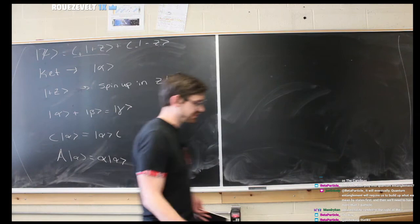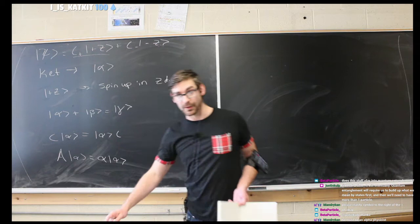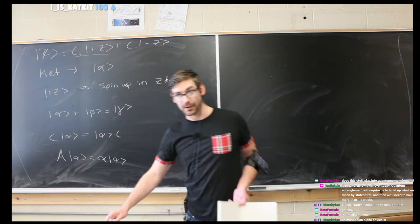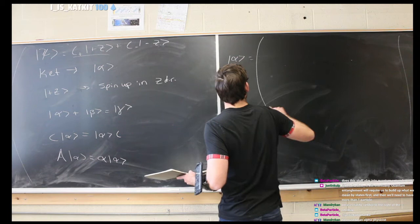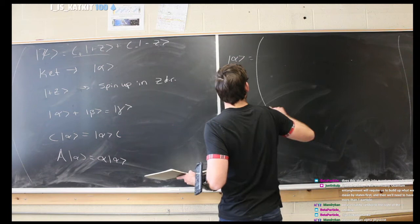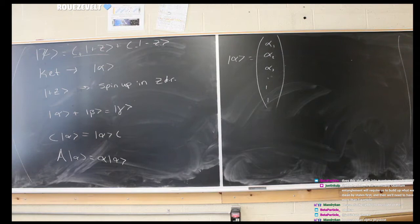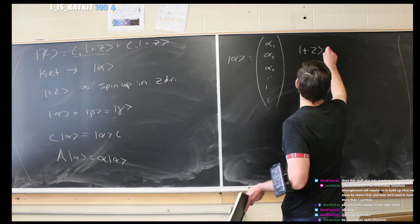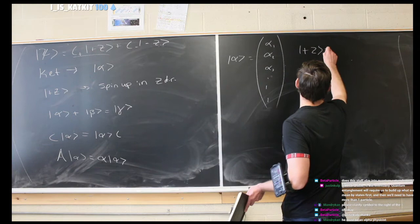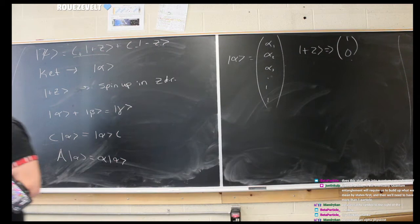You can also write these states as vectors. When you first learn quantum mechanics, the first semester is usually like learning a language, because these things aren't intuitive. One way to think about a ket is as a vector — more specifically, as a matrix: an n-by-1 matrix where you have some group of values making up the state, which is a description of the particle.